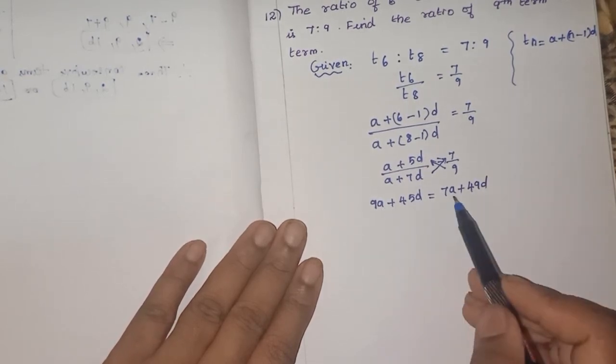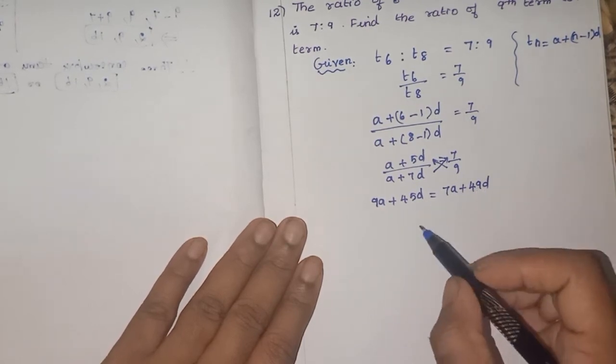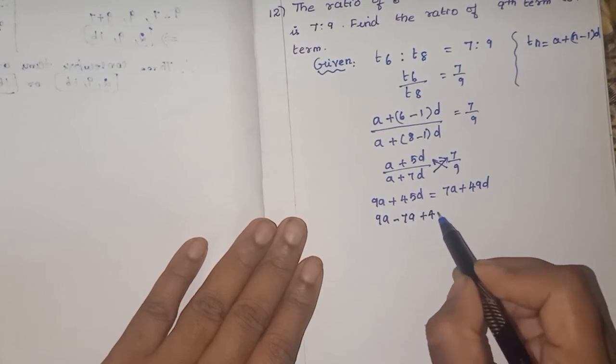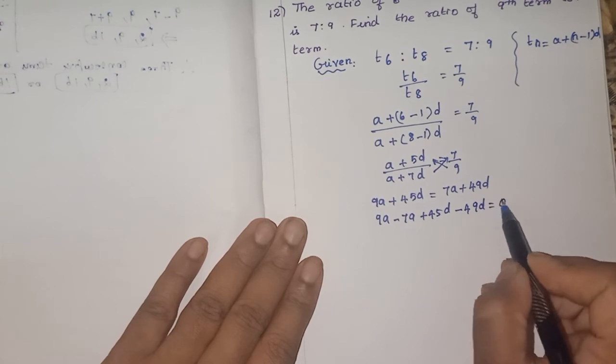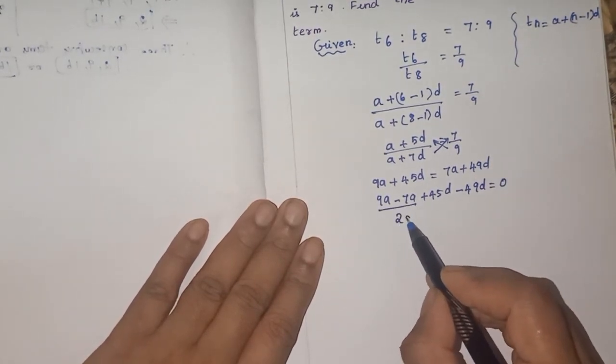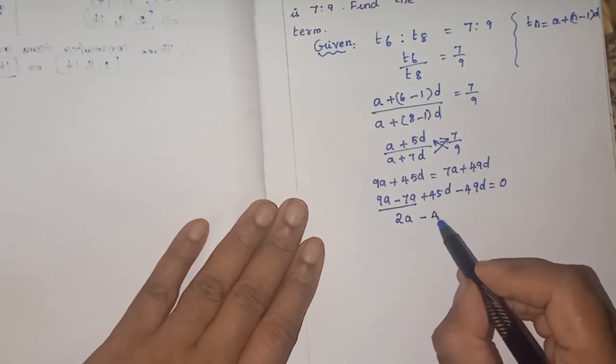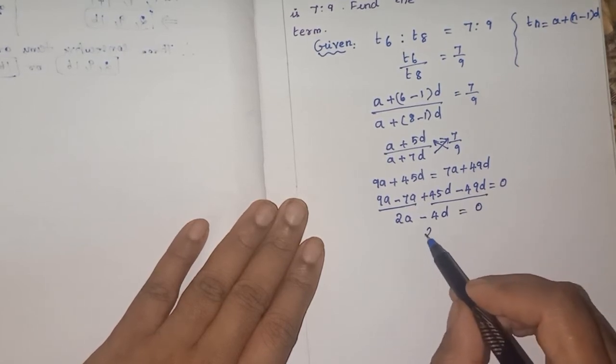Now I am bringing, because we have like terms. 7A I am bringing here and 49D I am bringing this side. So 9A minus 7A plus 45D minus 49D is equal to 0. So what is 9A minus 7A? 2A.